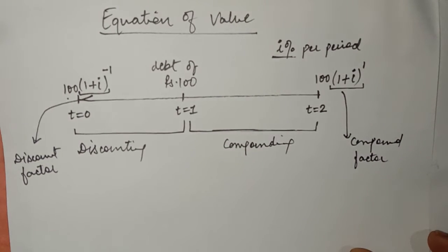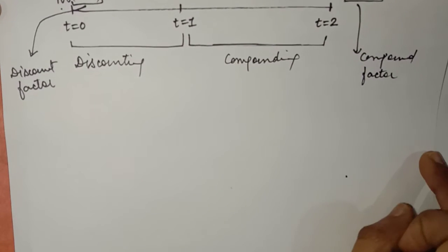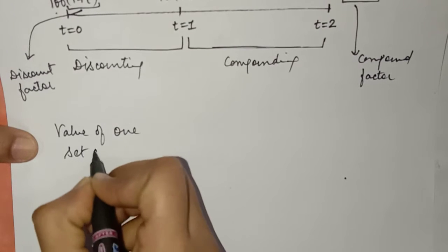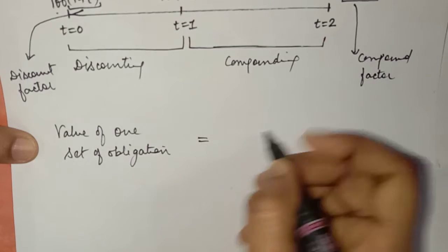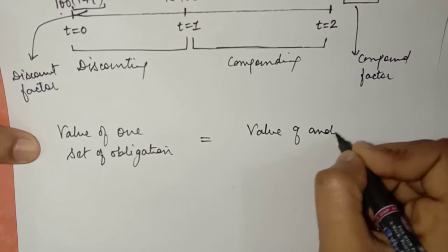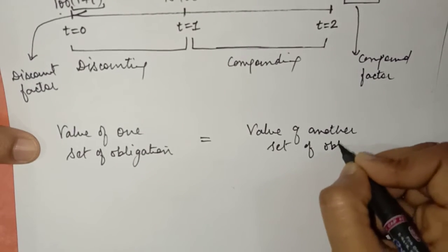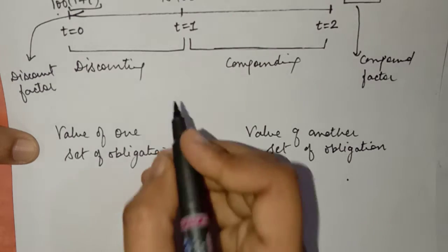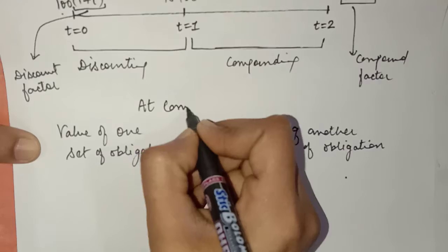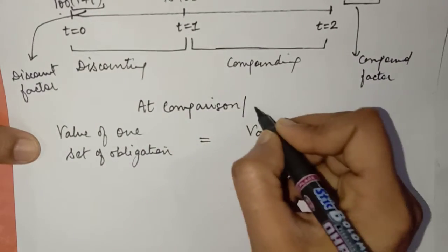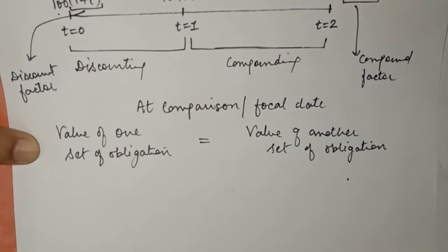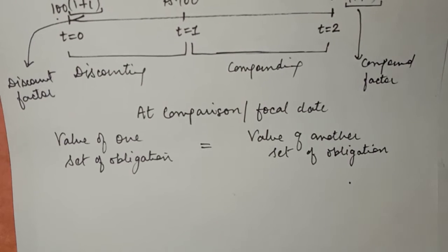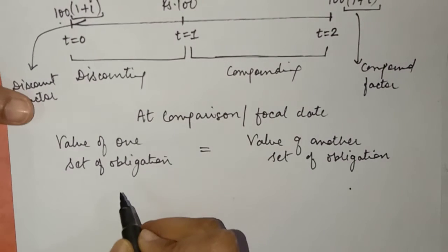Now let us understand the concept of equation of value. The equation of value basically provides us an equation which states that the value of one set of obligations will equal the value of another set of obligations, but only if we compare both these values at one point of time. That point of time is known as the comparison date, or also known as the focal date. At the focal date, the value of one set of obligations equals the value of another set of obligations when interest is compounded.